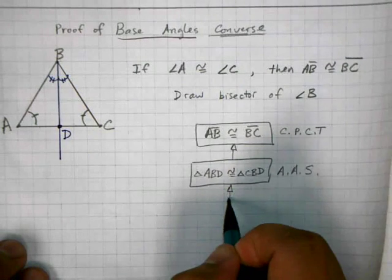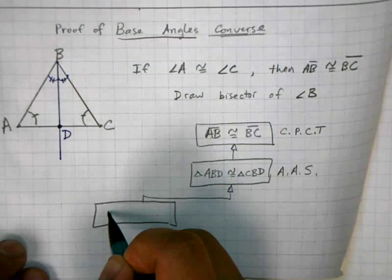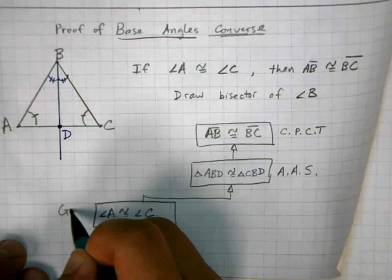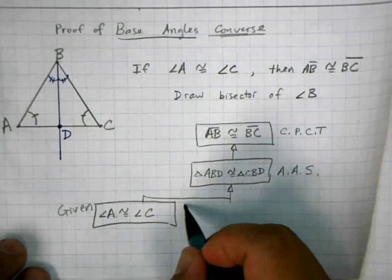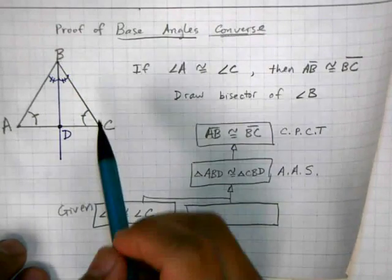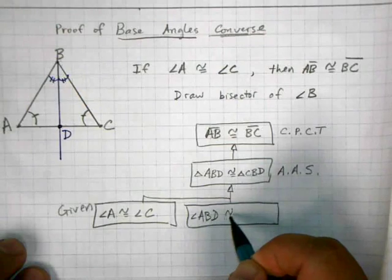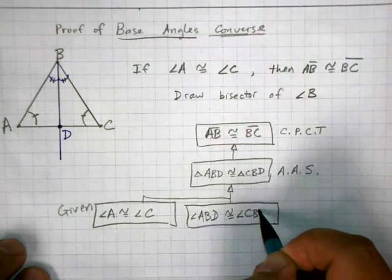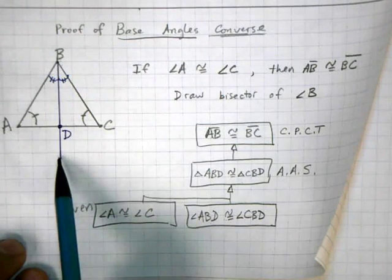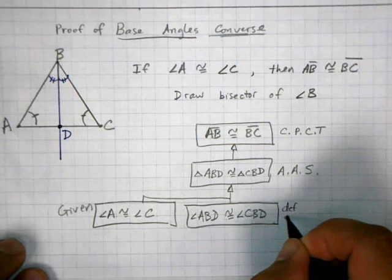And in order to do that, I need to show that an angle is congruent to another angle. And I can say that angle A is congruent to angle C, and this was given. Second statement that I can say is that angle ABD is congruent to angle CBD. And the reason I have these two angles in the first place is because I drew the bisector of angle B. So my reasoning here is that it's the definition of bisector.